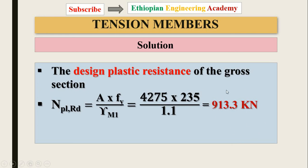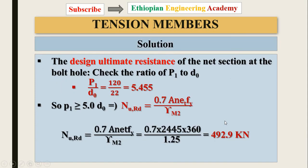The design ultimate resistance of the net section at the bolt hole is next. First, check the ratio of p1 to the hole diameter. In this case p1 = 120 mm and the hole diameter = 22 mm, giving a ratio of 5.455. Since p1 is greater than five times the hole diameter, we use the corresponding formula to calculate the design ultimate resistance of the net section, and inserting the numbers gives the result.